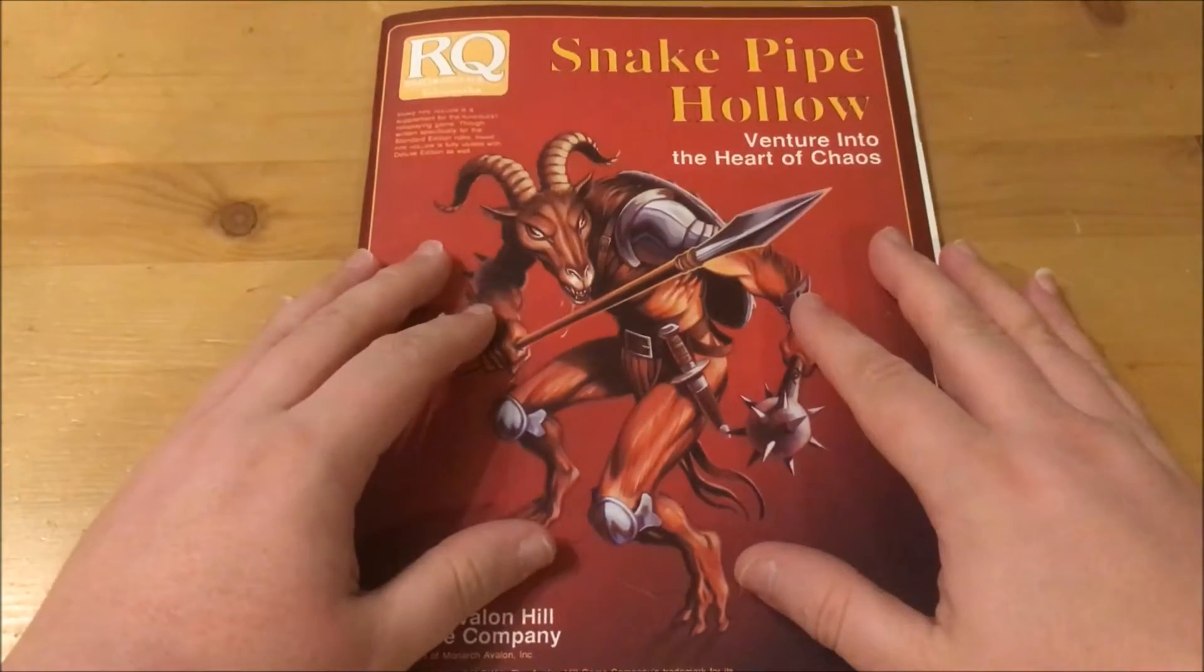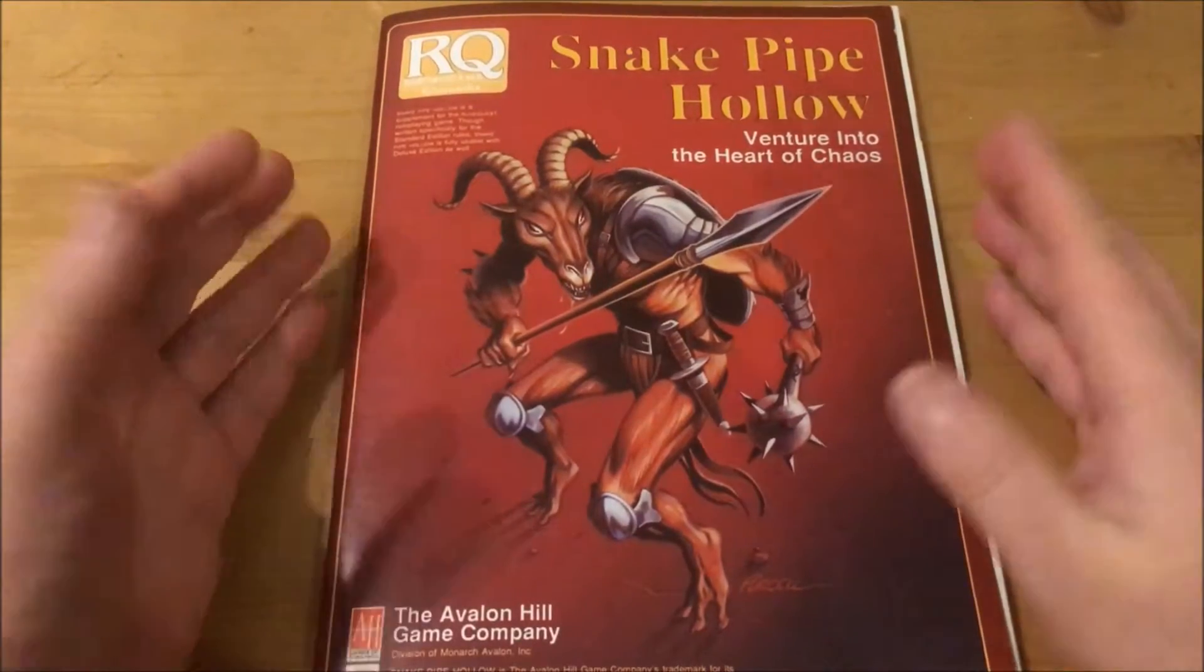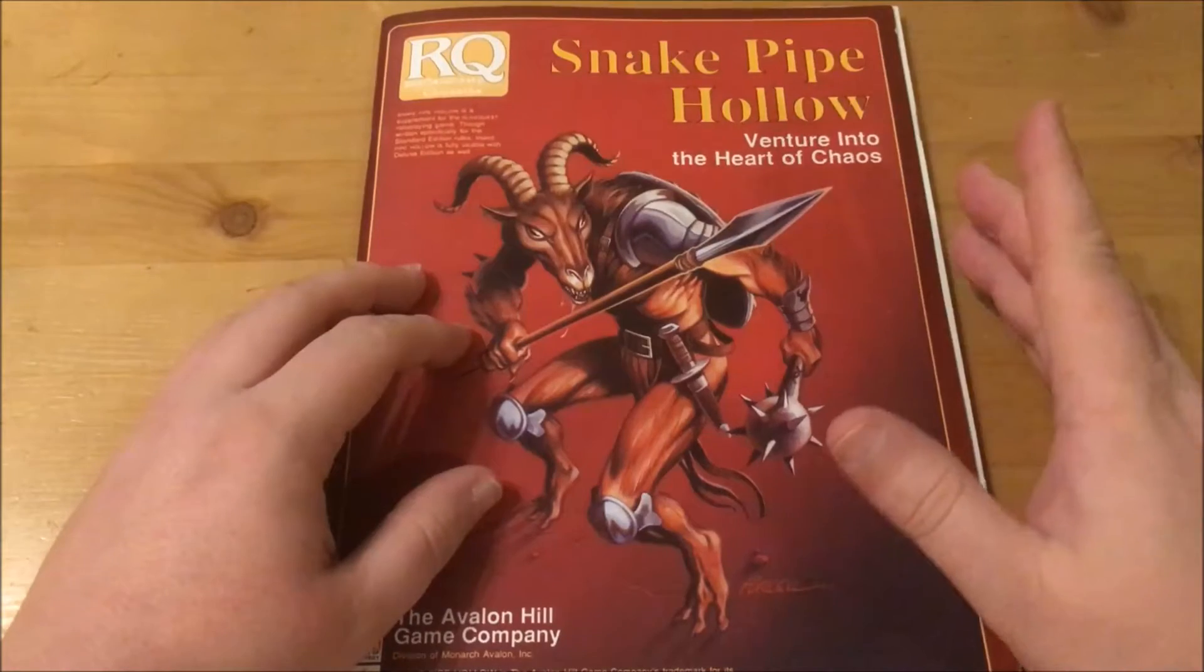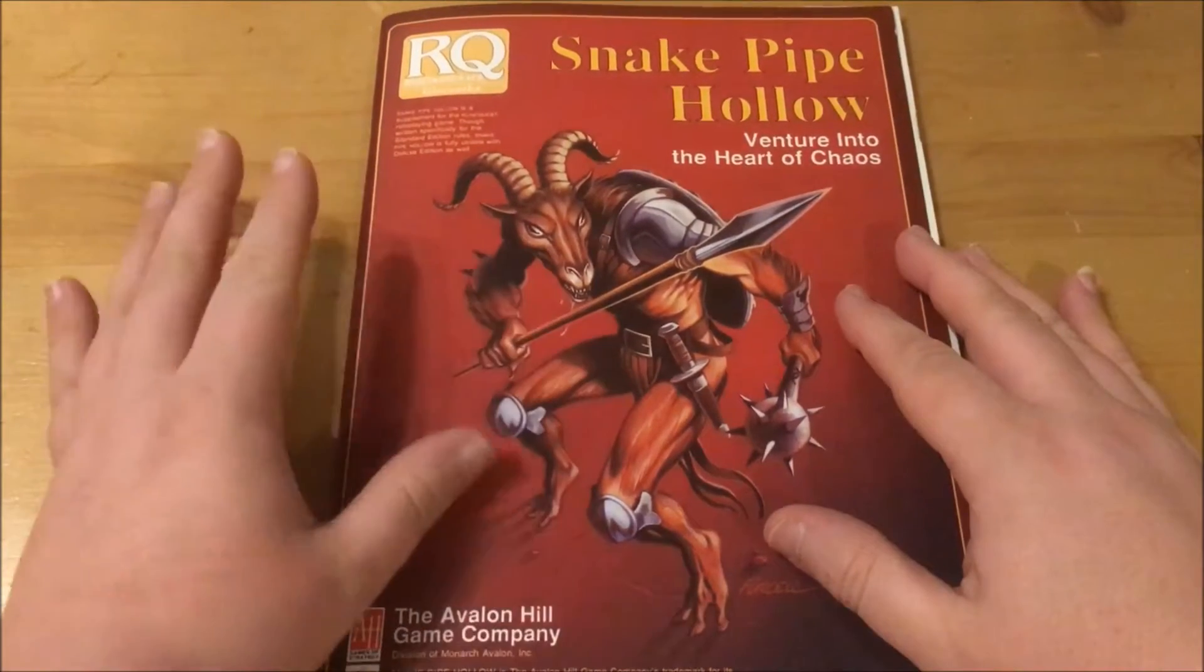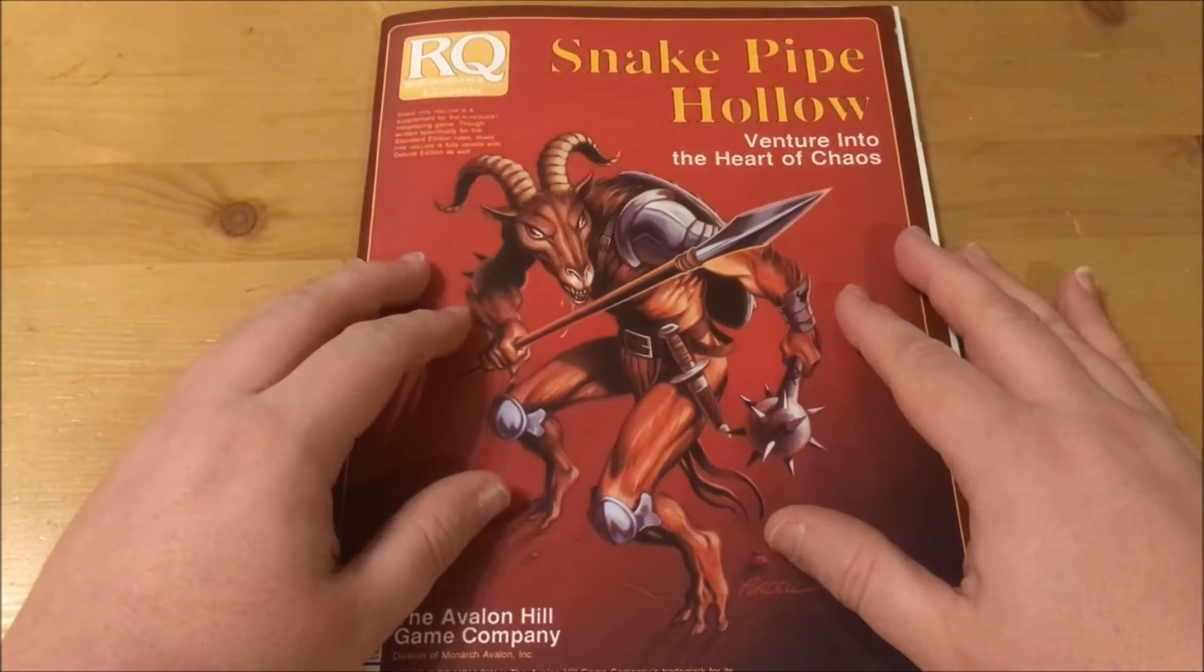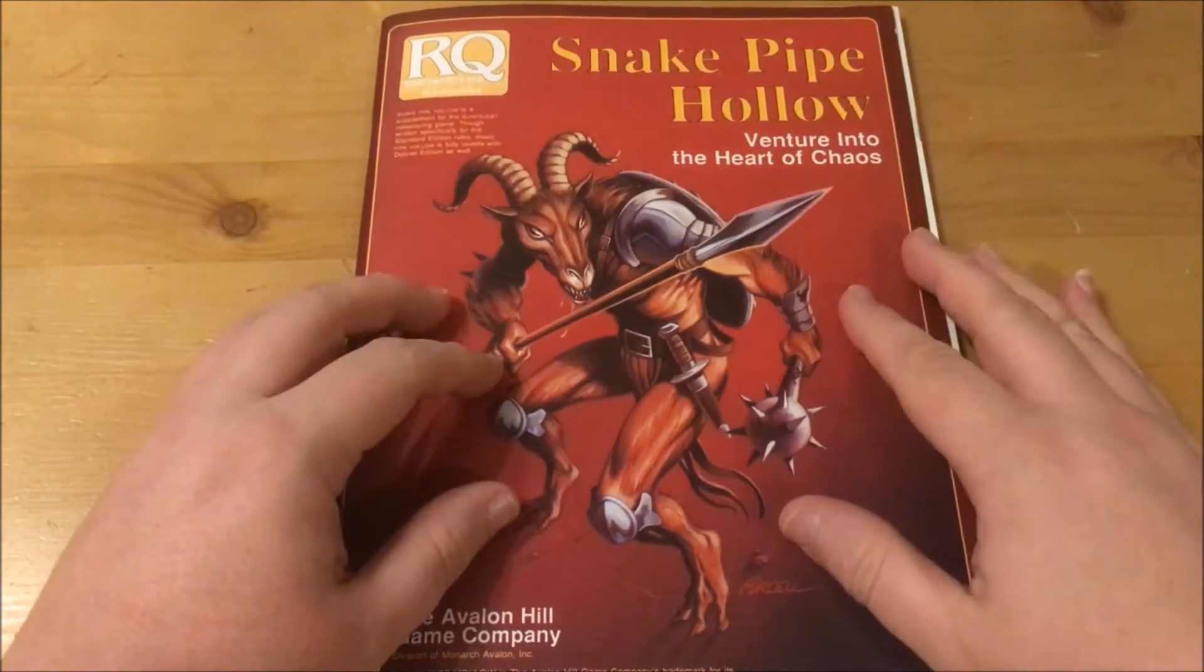First, a bit of history. Snake Pipe Hollow was originally published in 1979 and was one of the first adventures ever released for RuneQuest. It is a scenario book designed for a band of six to ten experienced adventurers, of which it is recommended that at least one be a healer.